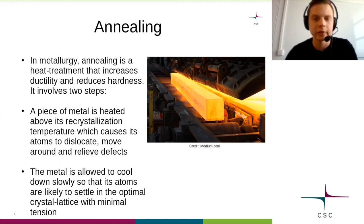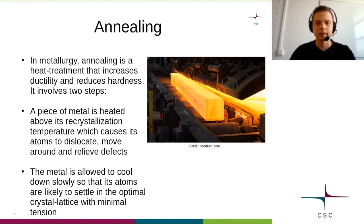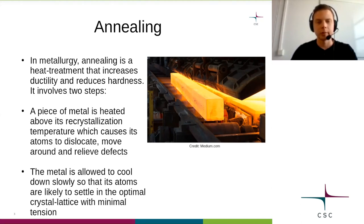These defects are relieved as the atoms are set free by the high temperature. The second step of the annealing is just letting the metal cool down back to room temperature. Because this cooling happens in a slow and smooth way, the atoms are likely to form an optimal minimum energy crystal lattice when they cool down and settle in their place.